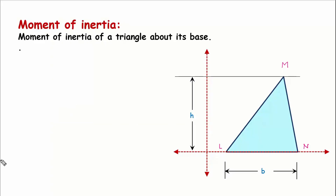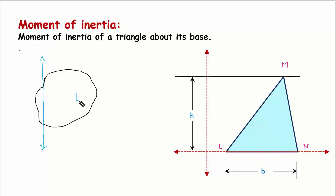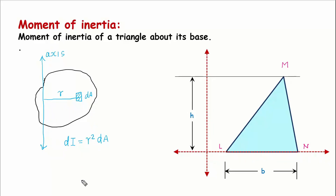Now the question is how to find the moment of inertia. Suppose if you have any area or section and we want to find the moment of inertia of this particular section about this axis, the basic idea is we take a small area dA which is situated at distance R from the given axis. The moment of inertia of this small area about the axis is R² dA, so the total moment of inertia will be given by integrating R² dA, with certain limits depending on the situation.